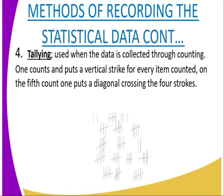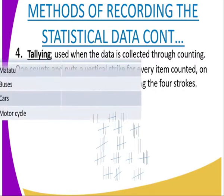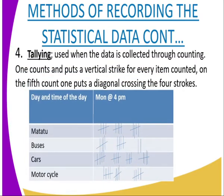The next method is tallying. This is used when the data is collected through counting. One counts and puts the data down — a vertical strike for every item counted. On the fifth count, one puts a diagonal crossing over the four strokes. For example, you count the vehicles that passed on a certain road at 4 p.m. — buses, cars, motorcycles — and record them using tallying.